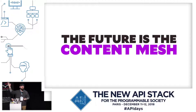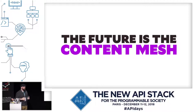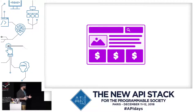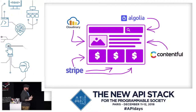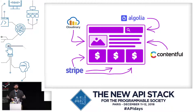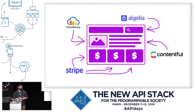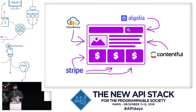The future is something we're calling the content mesh. In a traditional website, you had images, text, products, a search field — all coming from the same monolithic CMS. But with the content mesh, you pull that data from where it makes the most sense. Your images come from Cloudinary, search from Algolia, product and payment info from Stripe, and content from Contentful. These are all best in class at what they do, and you don't have to shoehorn everything else into them.